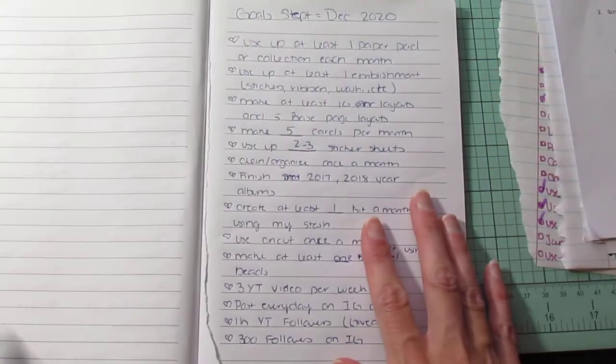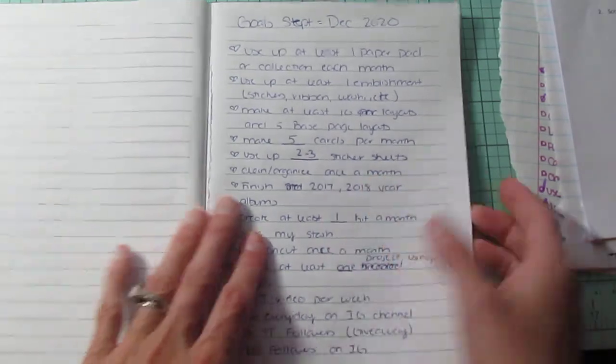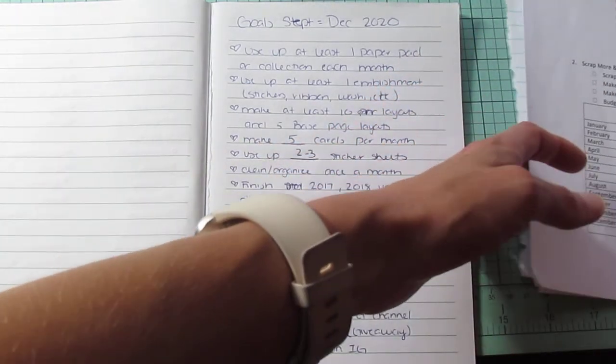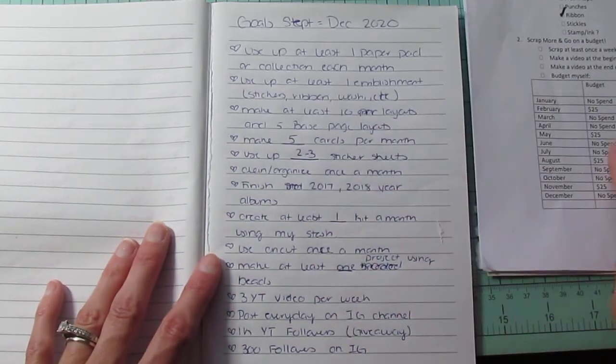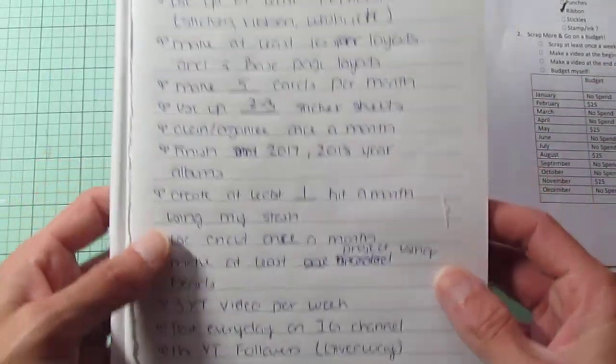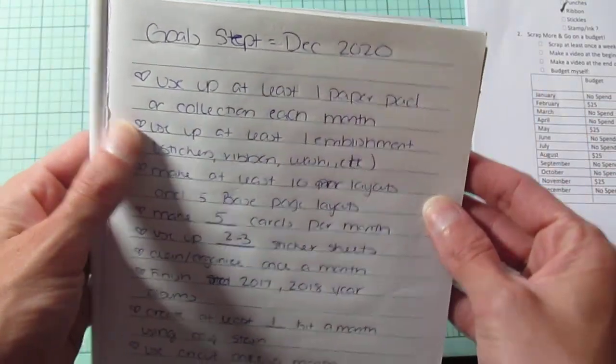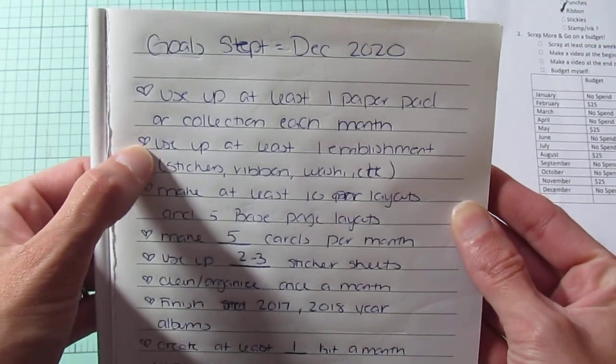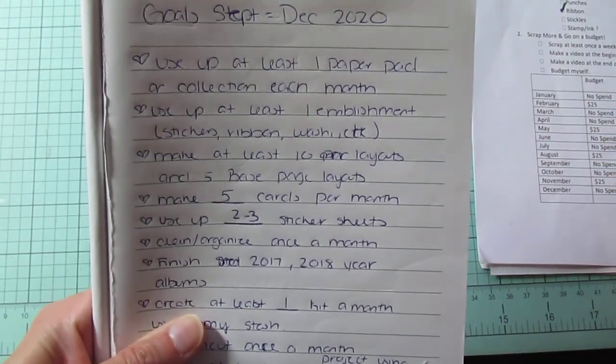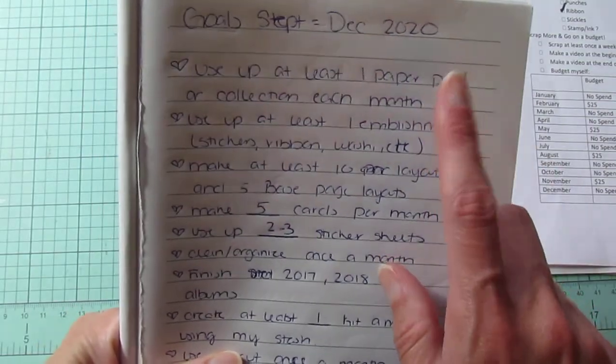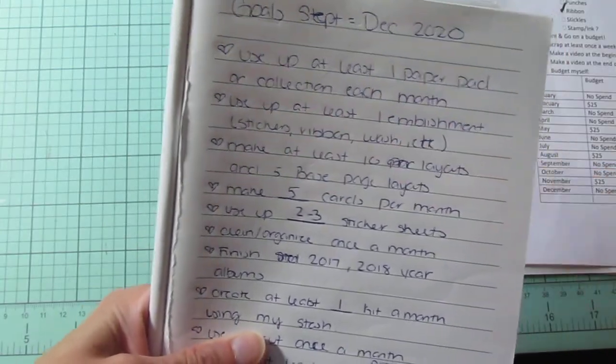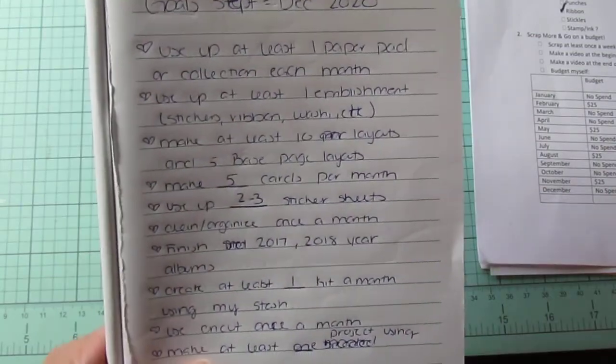So my goals for this year, I have this book that I'm using to write down some thoughts. These are going to be my goals for this year. I have use up at least one paper pad or collection per month. This can be for anything, making cards, making layouts. I would really like to use at least one paper pad. This can be any kind of size paper pad. I have mostly 12 by 12s but I do have some 6 by 6. I would love to use some of those as well.